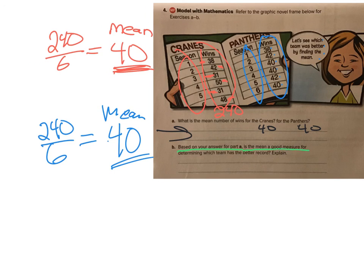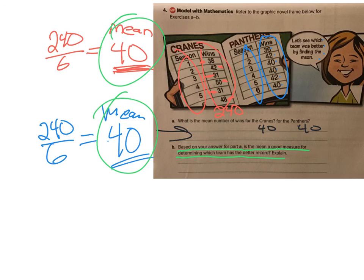Part b asks: based on your answers for part a, is the mean a good measure for determining which team has the better record? It's not really a good way to tell, because both teams have the same average of 40. You could point out that in one season the Cranes had 50 wins — better than the Panthers — but they also had 31 wins, which is lower than any Panther season. So you can't really answer the question, and the answer is a big no.